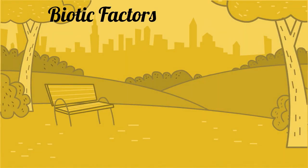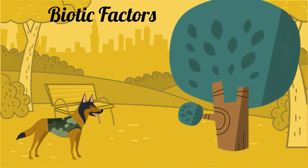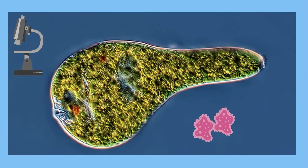Biotic factors in ecosystems are items that are considered alive, such as this animal or large tree, or as small as the single cell euglena or bacteria.